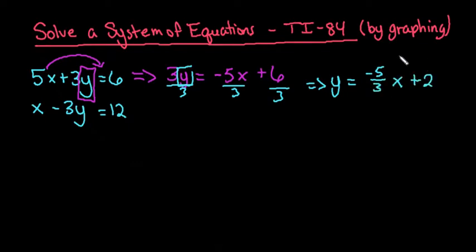So that's our first equation that we're going to plug into our calculator. The second equation, we're going to solve for y. So the first thing we would do is move the y to the other side. So we would have negative 3y. Make sure that you don't forget this sign. This negative does go with the 3.